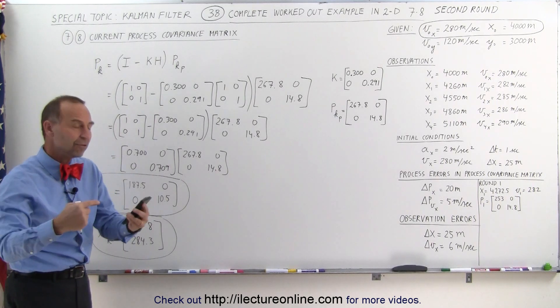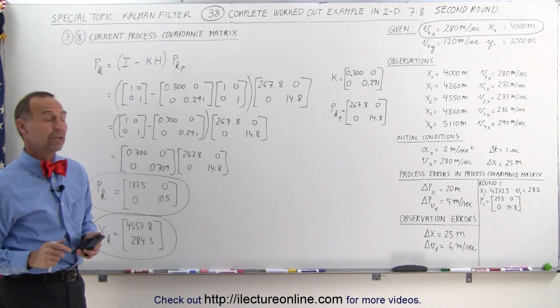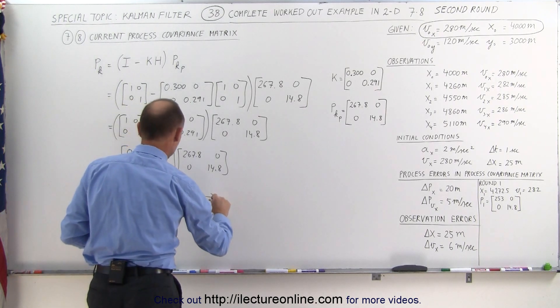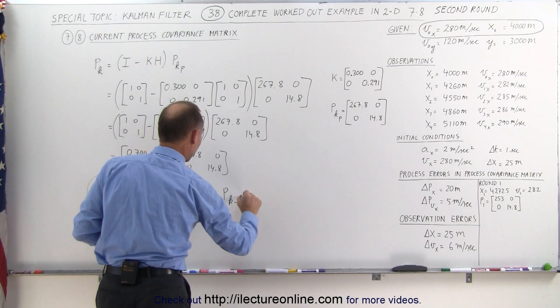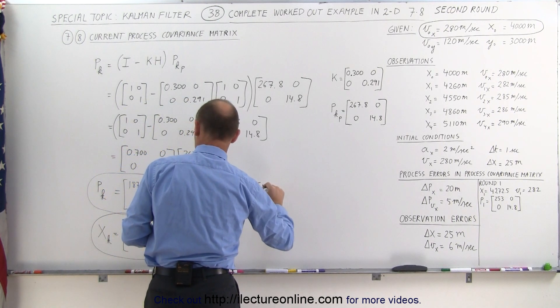Which then will become the previous state and the previous process covariance matrix for round 3. So now we're ready to convert that to p k minus 1 for the next round.